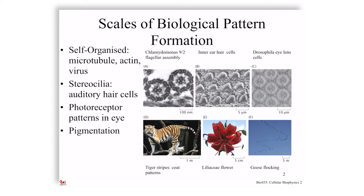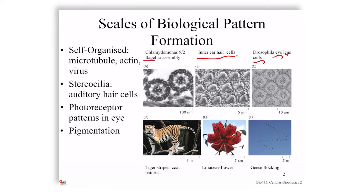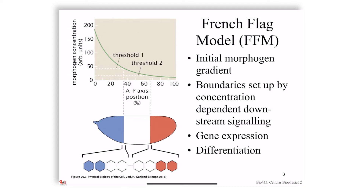At even larger scales, multiple organisms flock together, like geese or schooling fish. Pattern formation is almost inherent in biology. This slide is only to remind you that it happens at many different scales — all the way from hundreds of nanometers in the case of flagellar assembly in Chlamydomonas, to multicellular structures in Drosophila eye lenses and inner ear hair cells, all the way to coat formation, floral patterns, and swarming which happens over tens of meters. We're going to focus on the most fundamental model for pattern formation at the cellular and tissue level.